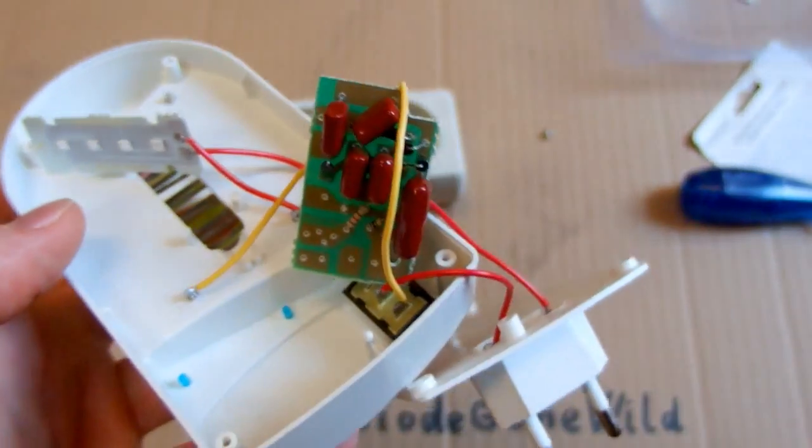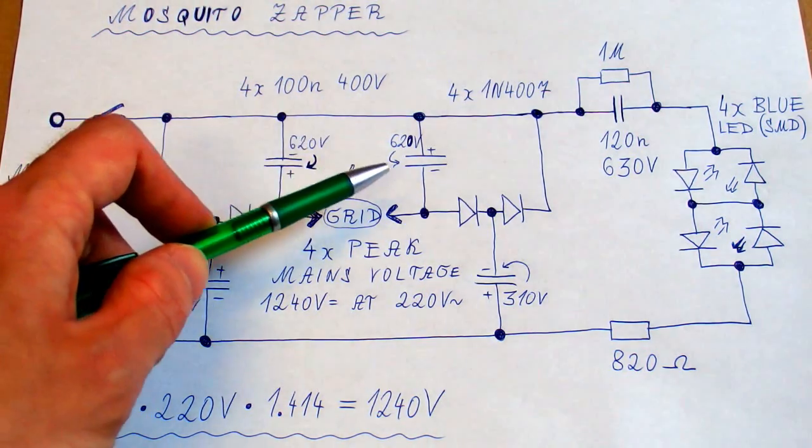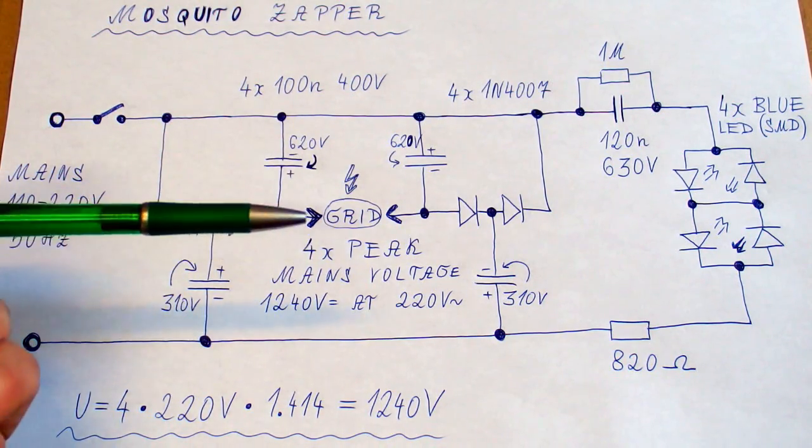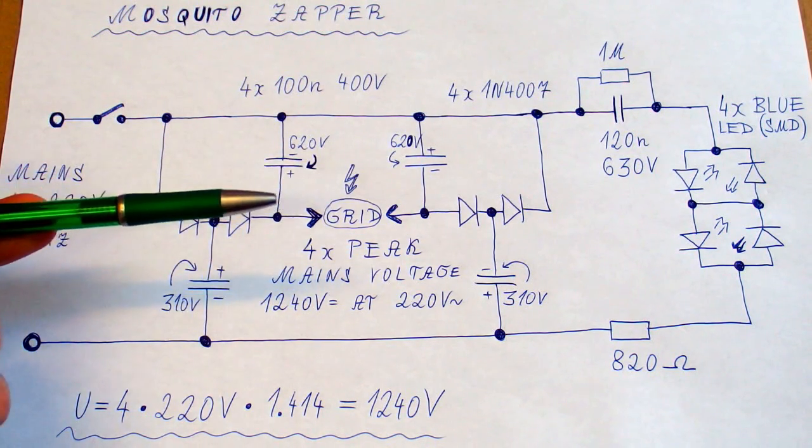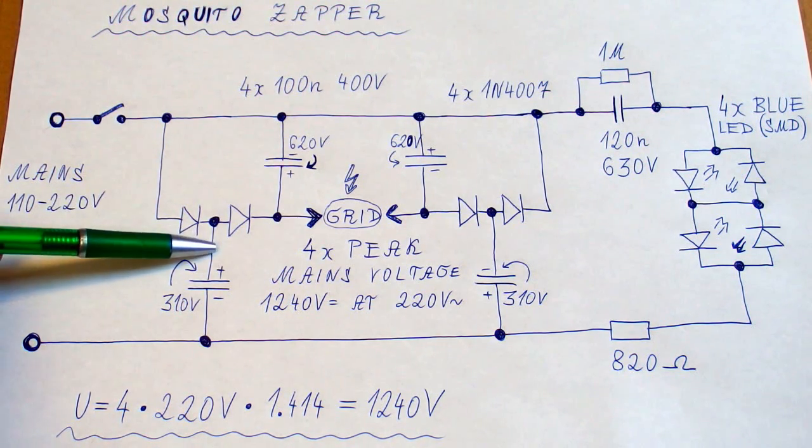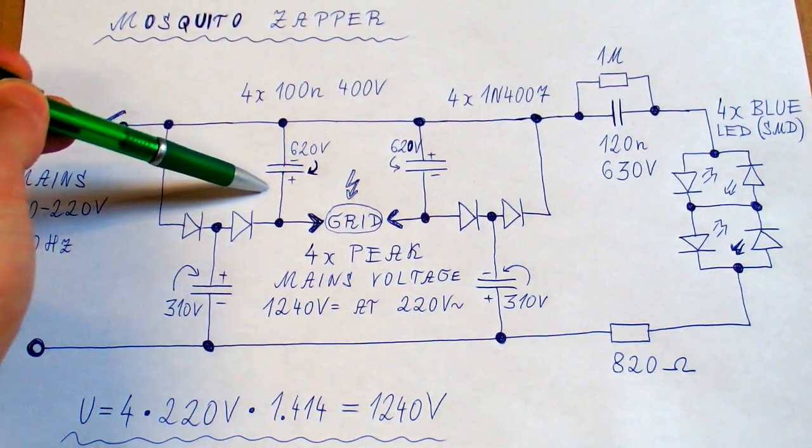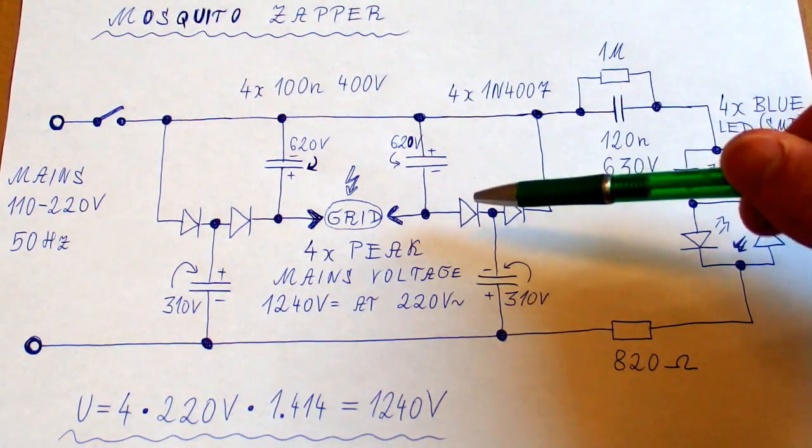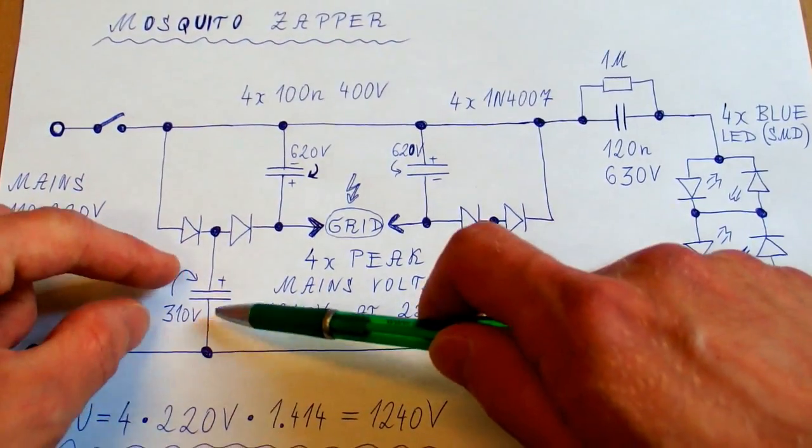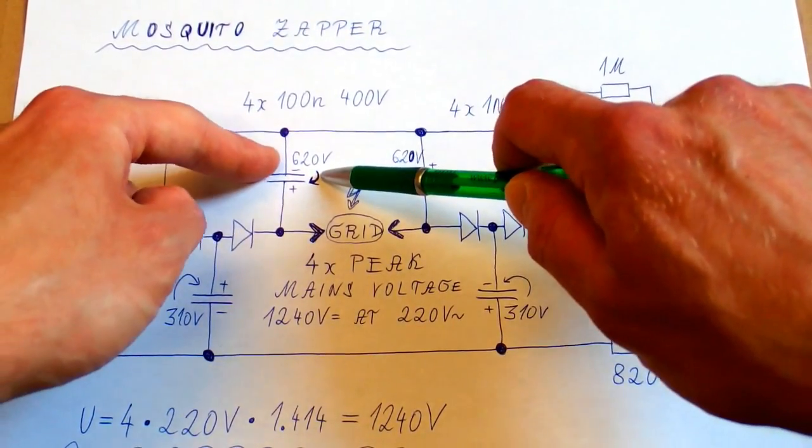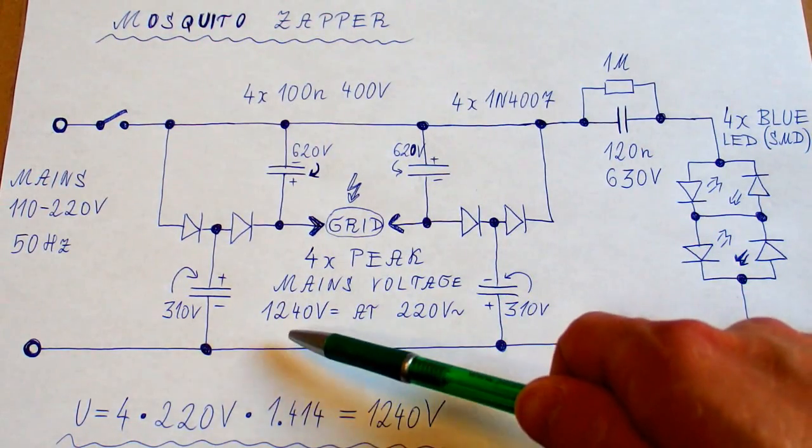So let's draw a schematic. So here's the schematic. The mains comes through a switch. It goes into a multiplier. The multiplier has four stages and it's divided into a positive and negative side. Each one is multiplying by two. And the mains is charging this capacitor. And then the voltage of this capacitor is adding to the mains and charging this one to a double voltage. And the same is happening in this one, but in the other polarity. So if the mains voltage is 220 volts, then this one is charging to 310 and this one to 620. This one is charging to the same voltage, but in the other polarity. So the total voltage is 1240 volts.